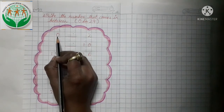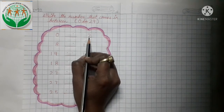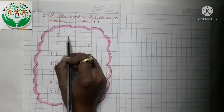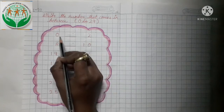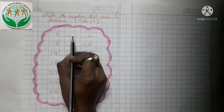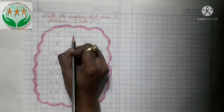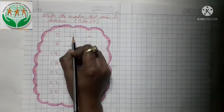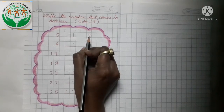This is number 0 and this is number 2. Now tell me what comes in between number 0 and 2 — 0 and 2 ke bich mein kya aega? Yes, 1. 0 and 2 ke bich mein kya aega? 1. So: 0, 1, 2.